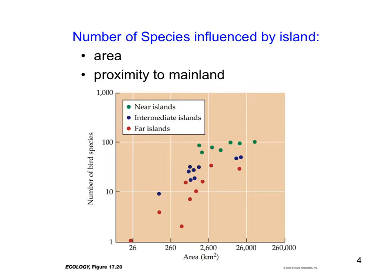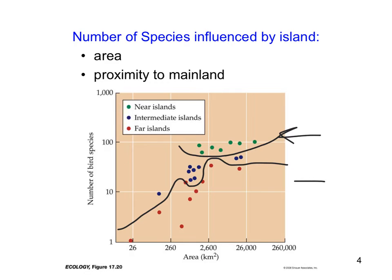If you take all those data together, you can generate a bigger picture: not only is area important in determining how many species are on an island, but also how close that island is to the mainland. Far islands are shown in red at the bottom, near islands are clustered at the top, and islands near the mainland tend to have more bird species than those far from the mainland. The overall pattern is still that general species-area relationship.